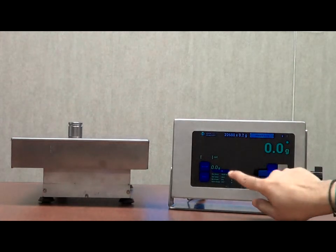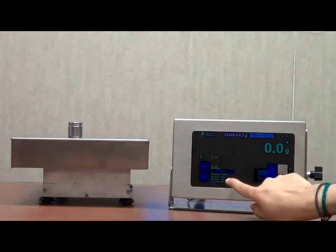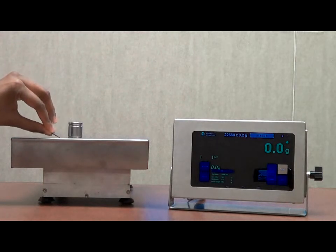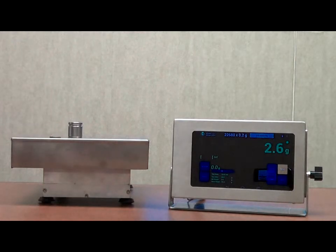We have the tare name that we can assign, and the values in the drop-down menu. I'm going to place a penny on the scale, and as you can see, it registered the weight of just the penny.